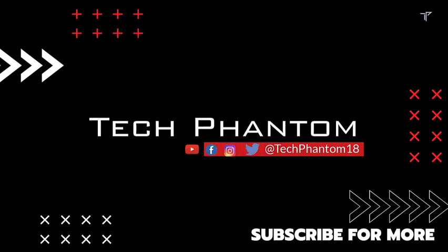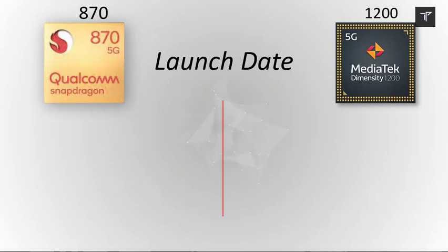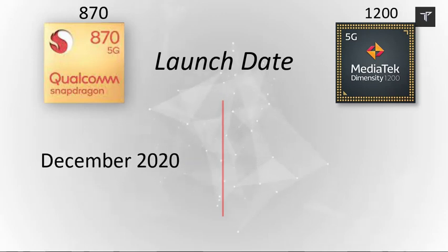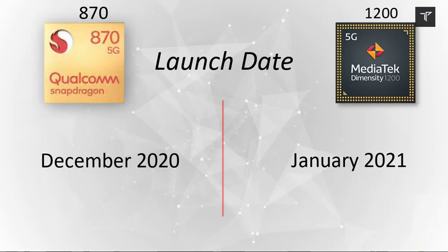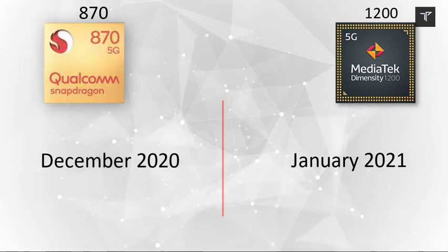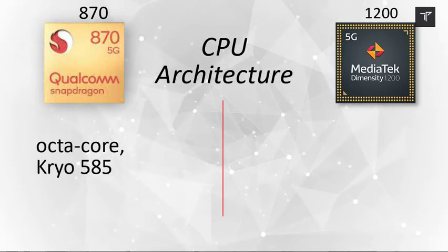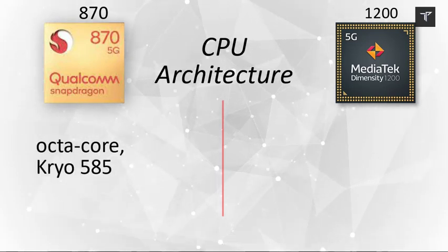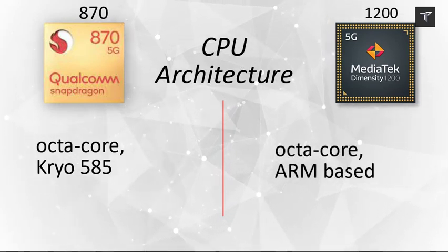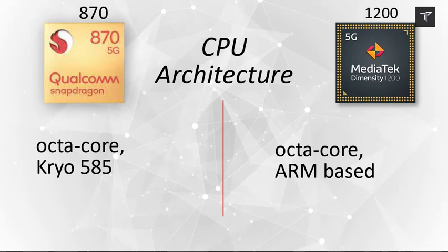Starting off with the launch date, the Qualcomm Snapdragon 870 was launched in December 2020 whereas the MediaTek Dimensity 1200 is the newer one, launched in January 2021. Both processors are octa-core, but the Snapdragon 870 uses Kryo 585 architecture while the Dimensity 1200 is based on the ARM structure.